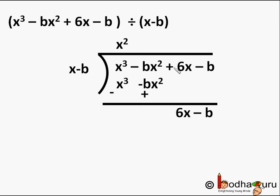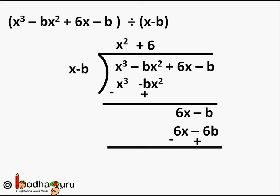Now divide 6x by x to get 6. Add +6 to the quotient. Multiply x - b by 6 to get 6x - 6b, and write it below. Subtracting: 6x - 6x = 0, and -b + 6b = 5b. The divisor x - b has degree 1, but the remainder 5b has no variable — b is a constant — so we stop here. The remainder is 5b and the quotient is x² + 6.